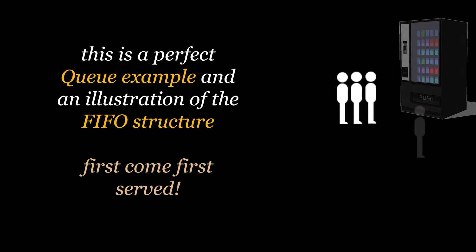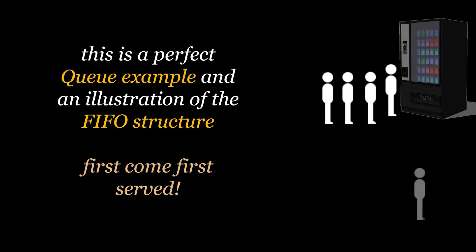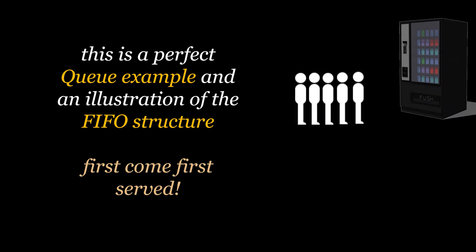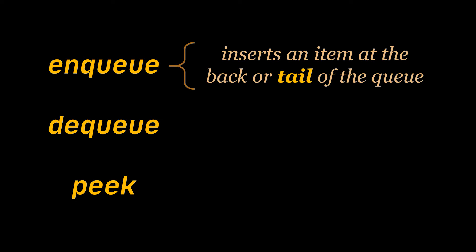That is exactly what happens with queues and what a FIFO structure means. If an element is enqueued into the queue before another element, when we dequeue an item, the item placed first is the one that will be served. A queue is just like a list, but instead of add, remove, and get operations, we have the enqueue, dequeue, and peek operations.